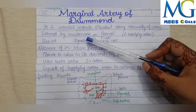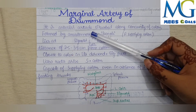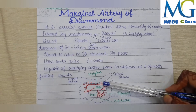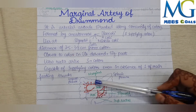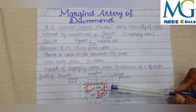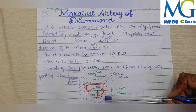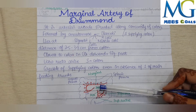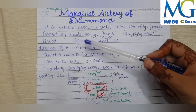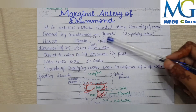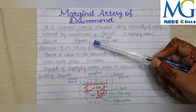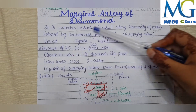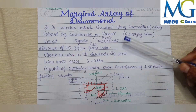The marginal artery is an arterial arcade running along the concavity of the colon. It is not a single specific named artery but a continuous channel formed along the colon — running from the ascending colon through the transverse colon to the descending and sigmoid colon.